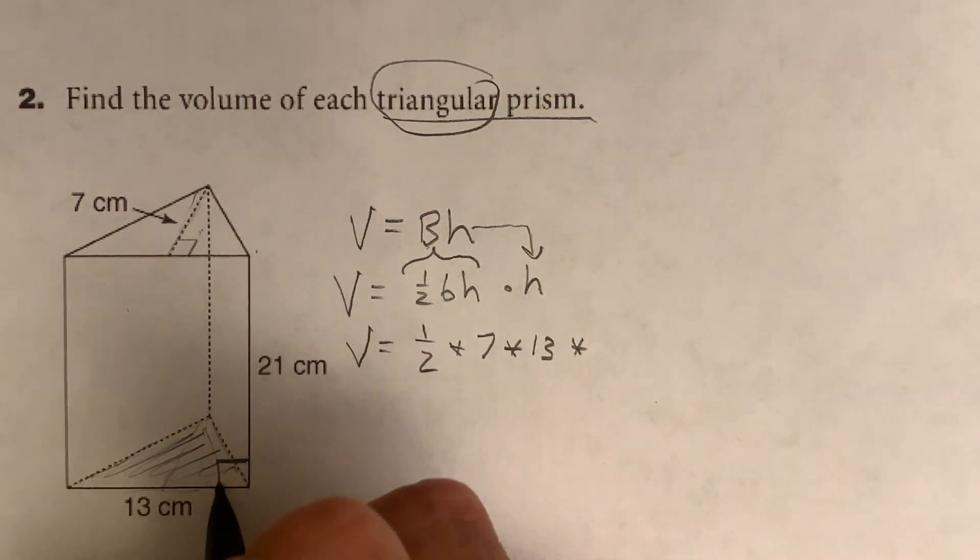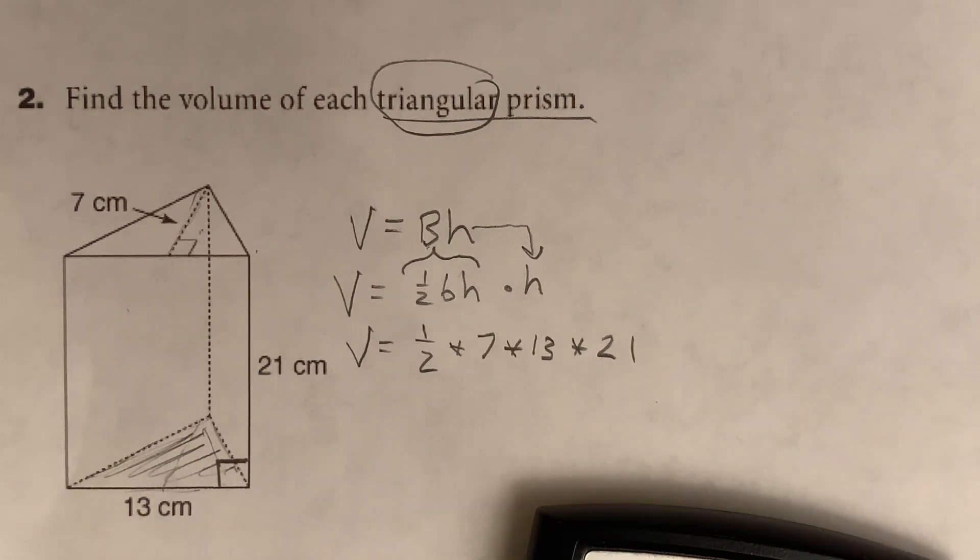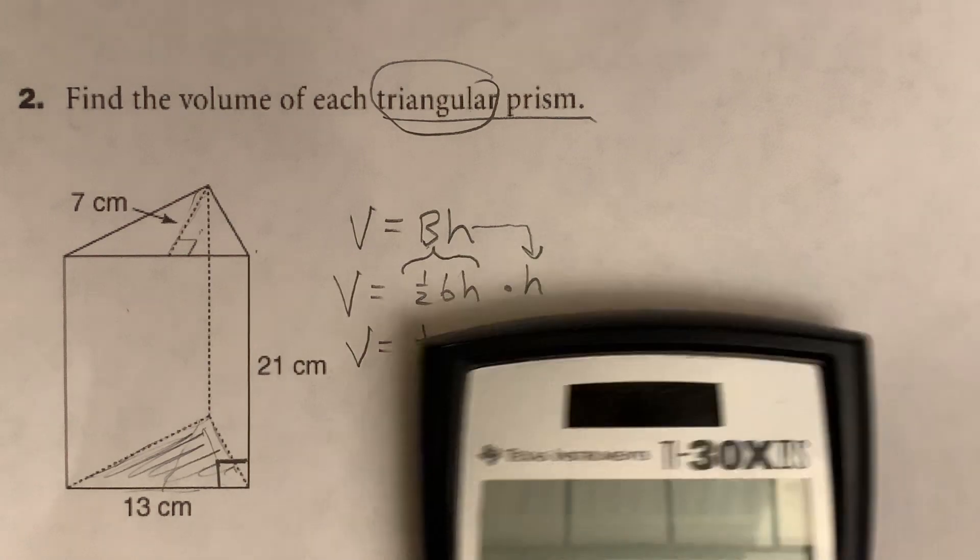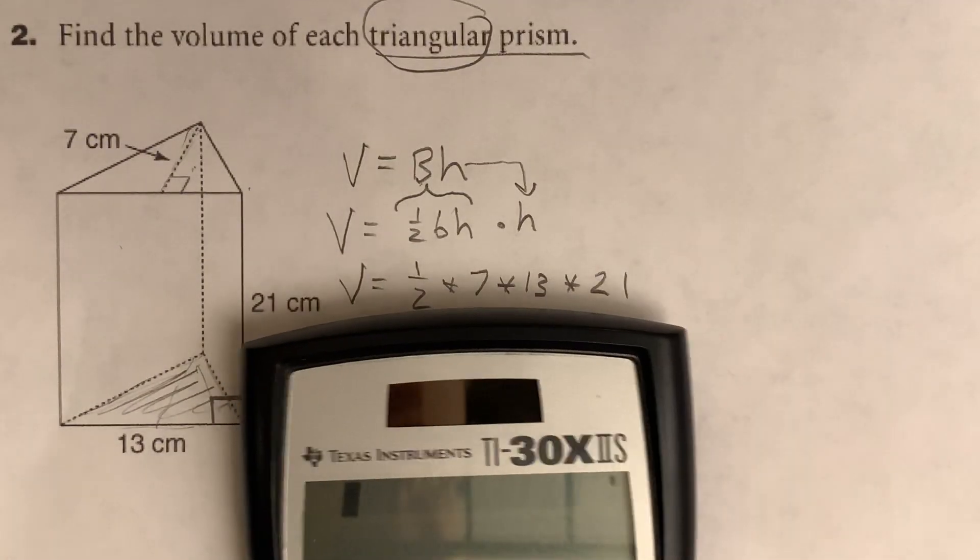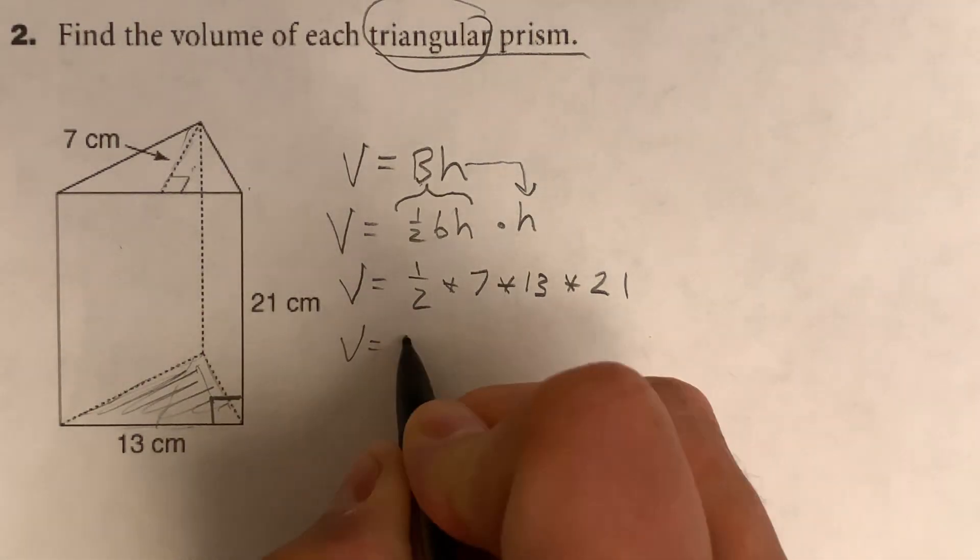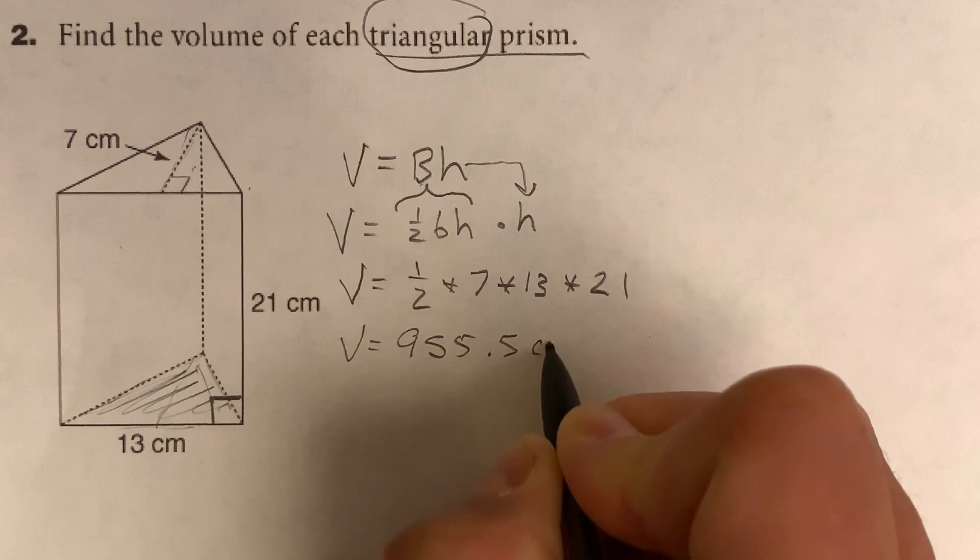And notice, again, it's at a right angle. That's a lot to multiply out. So let's just grab our calculator real quick and throw it in there. See what we get for this. I don't know if I can fit it. I can't quite fit it in. Let me move it up maybe a little bit. How about that? It just barely gets it in. Okay, so we've got a half times 7 times 13 times 21. 955.5. So the volume is 955.5 centimeters.